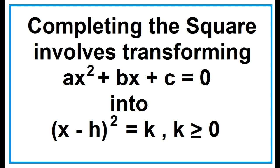Completing the square involves transforming ax squared plus bx plus c equals 0 into the form of the square of x minus h equals k, where k is greater than or equal to 0.